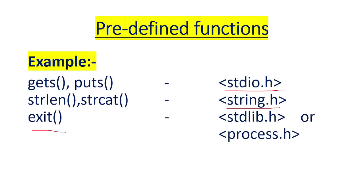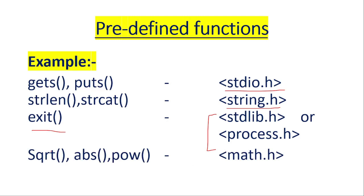One function is the exit function, which is available in both header files stdlib and process.h. After that we have some functions regarding mathematical operations — these are sqrt, min, square root, absolute, and pow. These functions are stored in math.h.